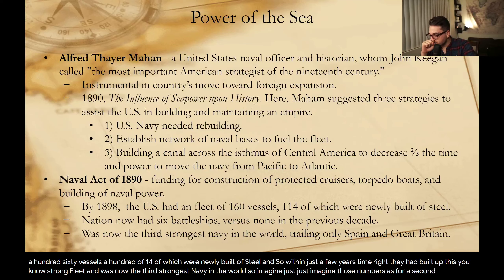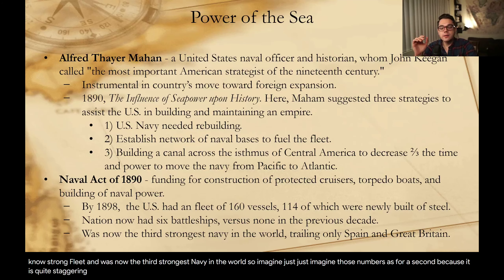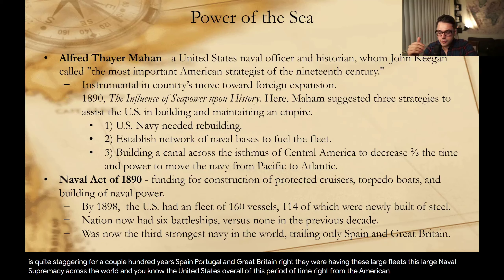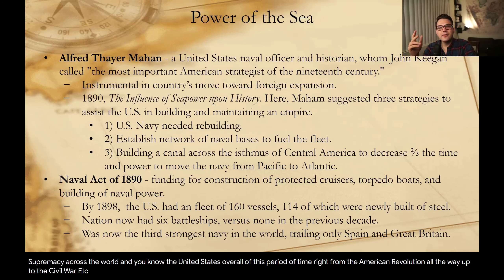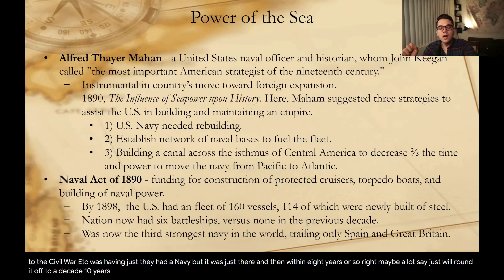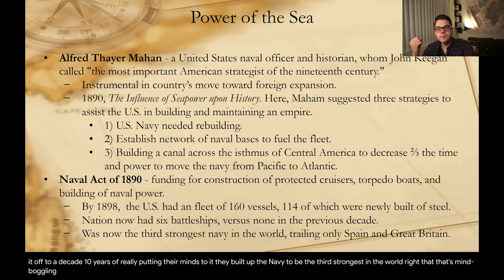Within eight years, the US had built up a fleet of 160 vessels, 114 of which were newly built of steel. Within just a decade of really putting their minds to it, they built up the Navy to be the third strongest in the world. For a couple hundred years, Spain, Portugal, and Great Britain had dominated with large naval supremacy, while the United States just had a Navy that was merely there. But that's just a testament to just how much industrial might the US had at its disposal at this point in time.